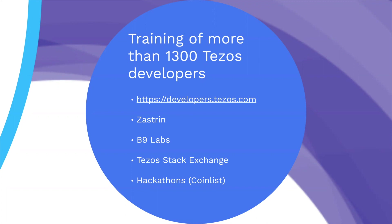We've funded a free course called Zastron, which enables anyone to jump in and build a simple DApp. There's B9 Labs, an accelerator program that had over a thousand applicants — they screen applicants, form teams, build projects, and award a certificate for the winning project. We also have Tezos Stack Exchange, one of the few blockchain protocols with its own Stack Exchange website. And of course, hackathons like this one with CoinList, which has over a thousand registrants, plus large hackathons in Europe and North America.